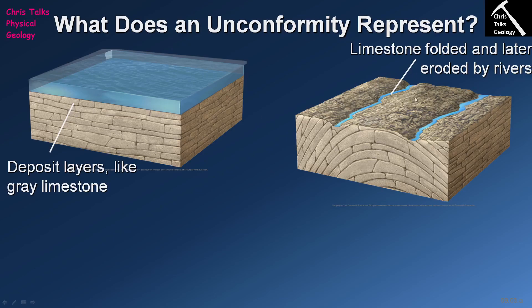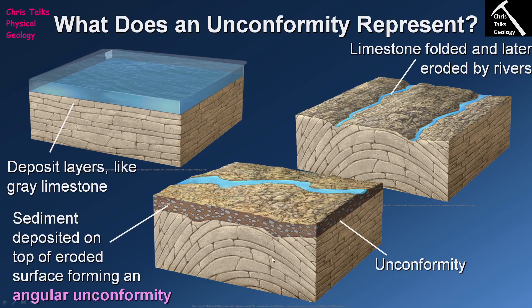Our folded limestone sequence is being eroded by a river, destroying rock and therefore losing time because that part of the rock record is gone. A geologist can't see it, so we don't know what was happening during that period of time. Then a new layer of sediment is deposited over the top of this erosional surface. So we have our sequence of limestones, the unconformity running along here, and then the younger layer of sediment deposited over the top.